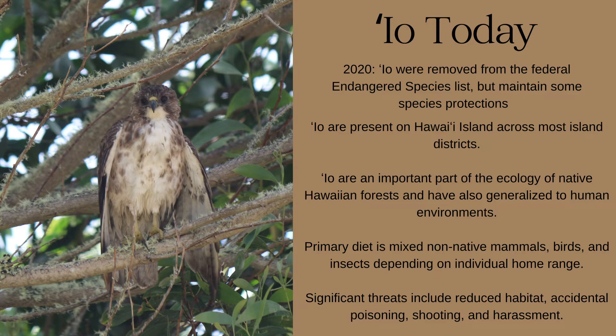This is important because introduced predators and human threats, like loss of habitat, accidental poisoning, and harassment, are still threats to EO. On Hawaii Island, EO are present across most island districts, but are still restricted to a fraction of what we can infer was their historic range. These birds are an important part of the ecology of native Hawaiian forests, but they've also generalized to human environments. EO have adapted to eat introduced mammals, for example, and they can be seen gliding over orchards. Even still, EO are a part of the original biodiversity of the Hawaiian Islands, and they are respected and protected members of our community.